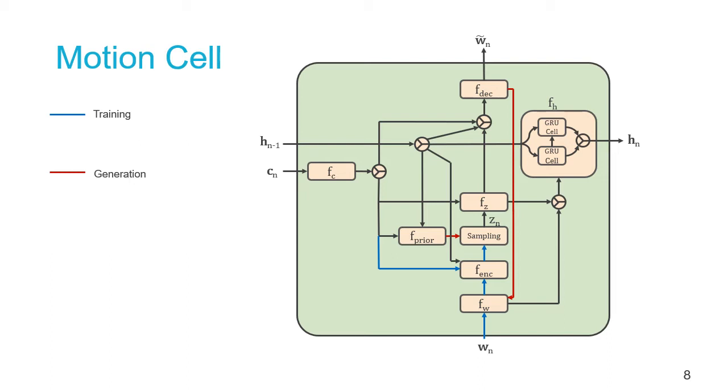The transition block models the temporal dependencies and is a function of not only the input variable and previous internal state, but also the current latent variables. By conditioning both spatial and temporal paths on the same latent variable, we introduce variability across both dimensions simultaneously.